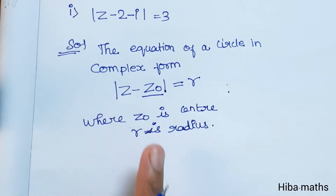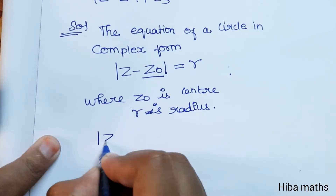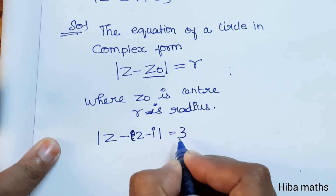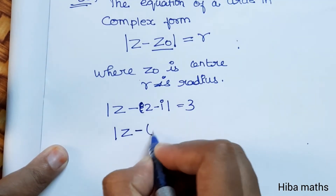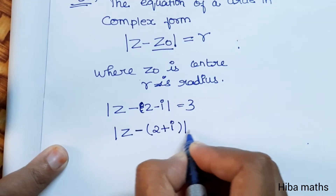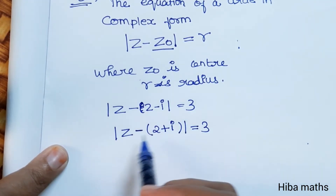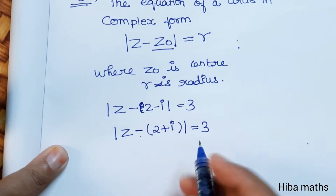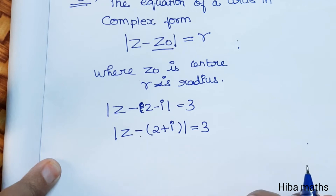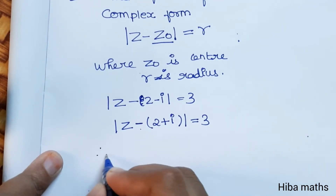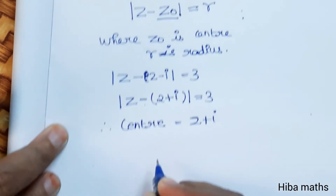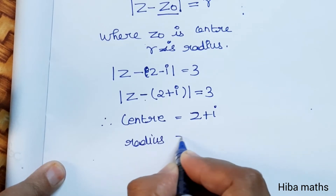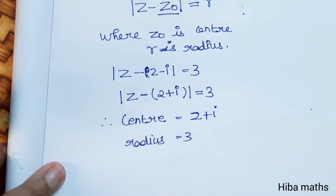Looking at the given equation, z minus 2 minus i equals 3, we rewrite it as z minus (2 plus i) equals 3. Comparing with z minus z₀ equals r, the value of r is equal to 3. Therefore, center is equal to 2 plus i and radius is equal to 3.